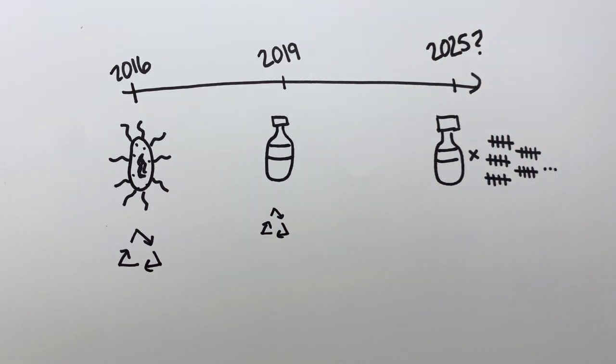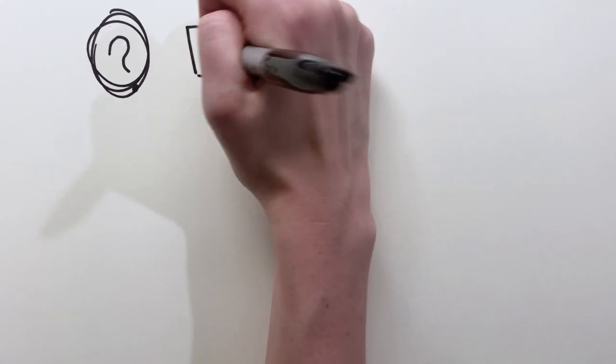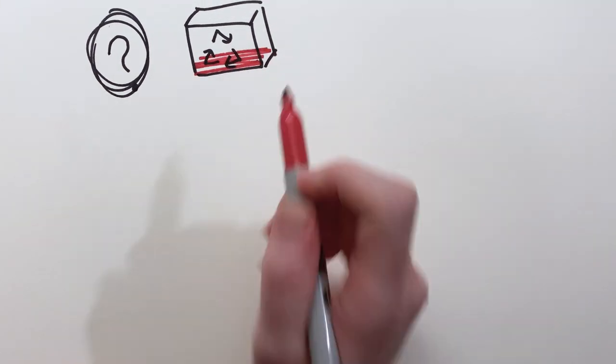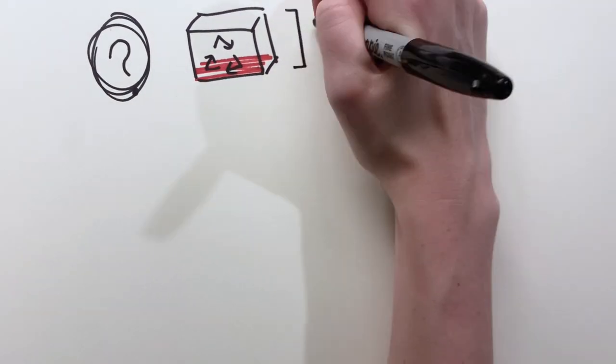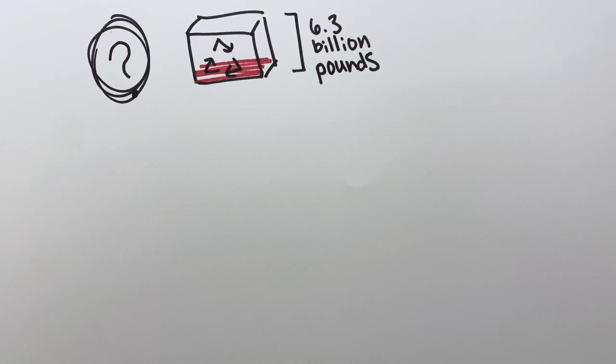If you're thinking, wait a second, don't we already know how to recycle water bottles? Well, you're not wrong. About 30% of the PET used in plastic bottles in the U.S. each year is collected for recycling. In 2018, this meant that about 1.8 of the 6.3 billion pounds of PET bottles were recycled.